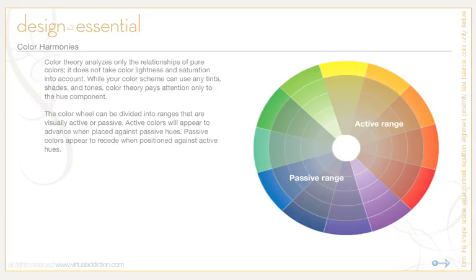When we talk about color theory, it does not analyze tints, shades, and tones. Color theory analyzes only the relationship of pure colors and doesn't take into consideration color lightness and saturation. While your color scheme can use any tints, shades, or tones, color theory pays attention only to the actual pure color component.